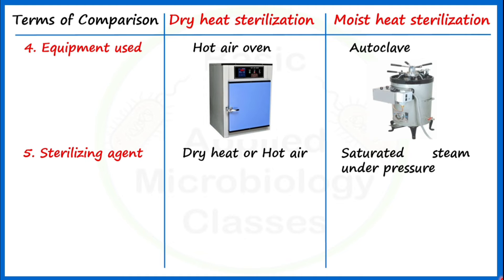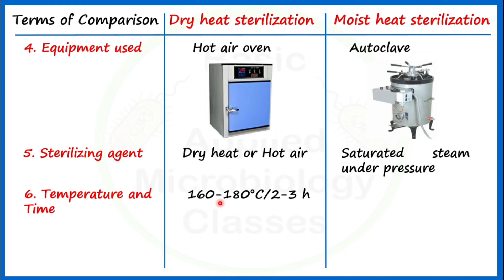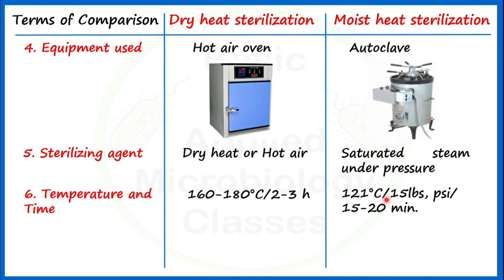The sixth point of difference is the temperature-time combination. Generally, 160 to 180 degrees Celsius is used in dry heat sterilization for two to three hours. In the case of the autoclave, we use 121 degrees Celsius at 15 PSI pressure for 15 to 20 minutes. This is the most commonly used time and temperature combination.